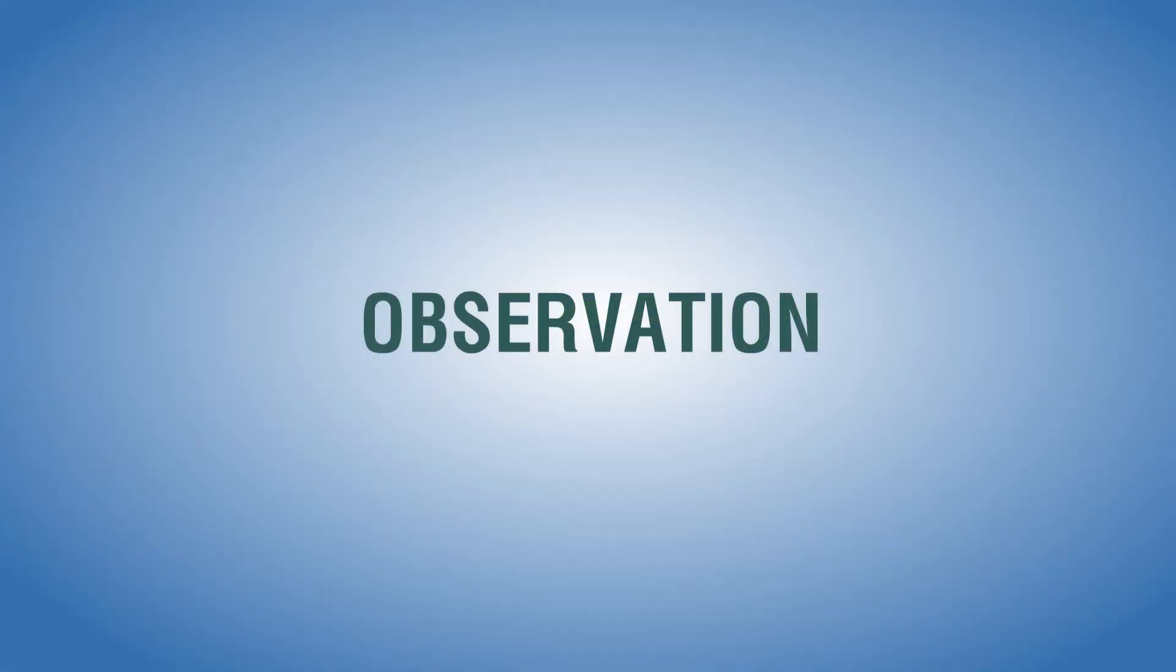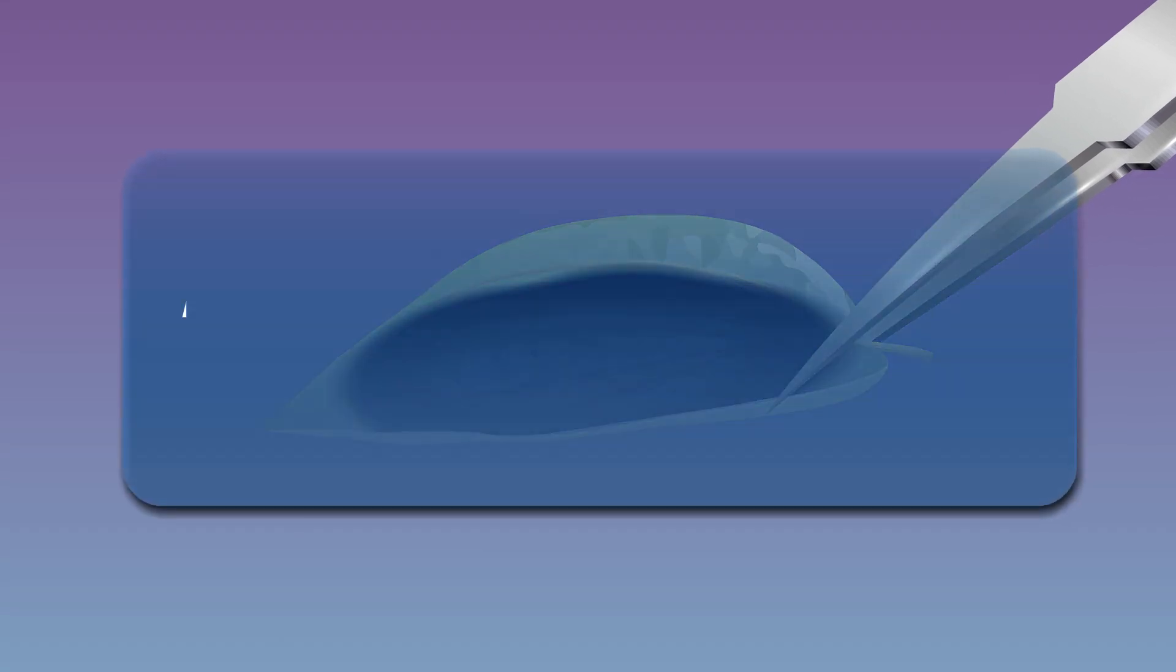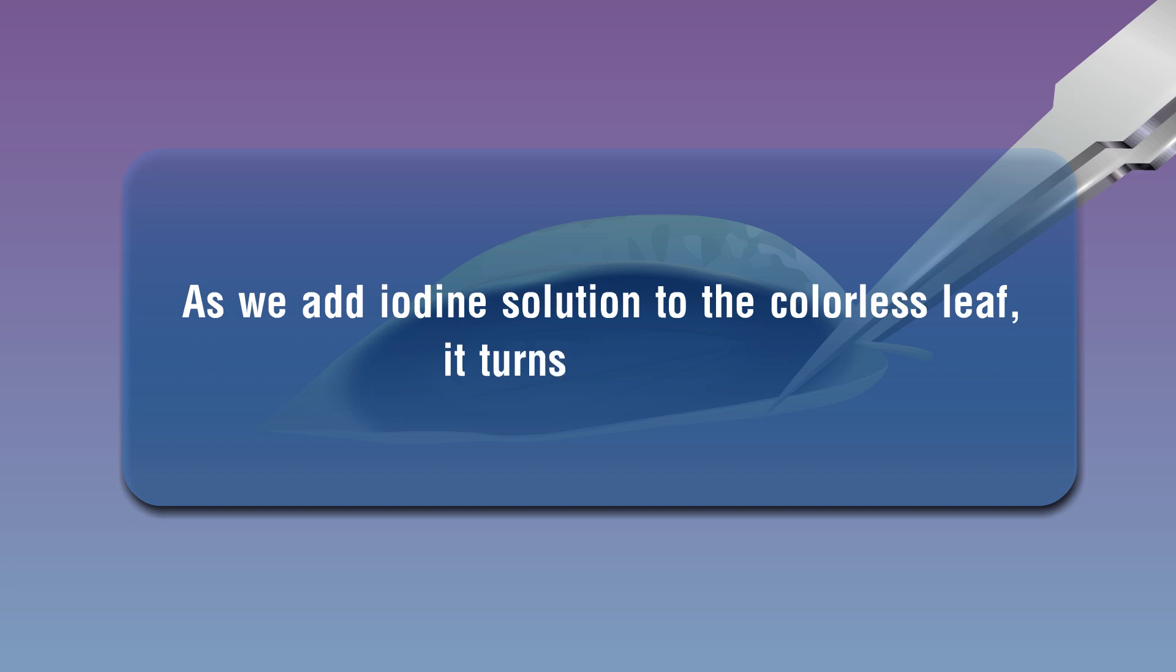Observation: As we add iodine solution to the colourless leaf, it turns blue-black.